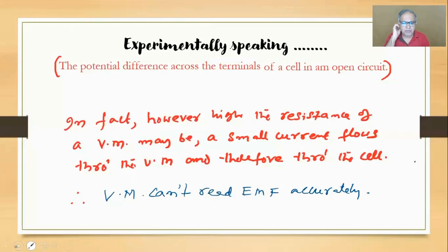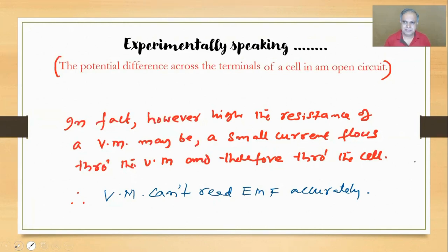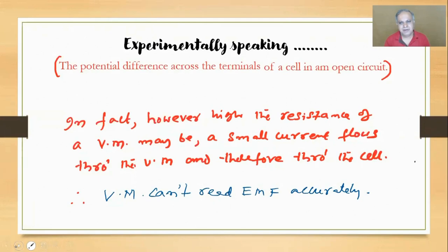However high the resistance of the voltmeter may be, a small current flows through the voltmeter and therefore through the cell. Our aim was to measure that potential difference formed in the cell as a result of those chemical reactions. But once current flows inside the cell, a part of that energy is absorbed by the cell itself - just touch it and you feel it getting hot. So you won't be measuring the true potential difference that was formed in the beginning. The voltmeter cannot measure EMF very accurately.